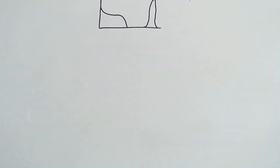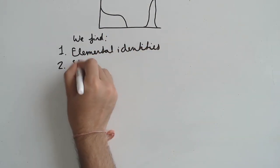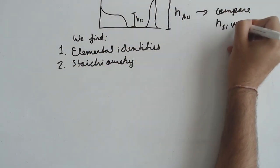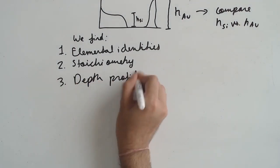This way, we know elemental identities, stoichiometry by the comparison of signal strengths, depths and profiles, all without needing to completely destroy a sample.